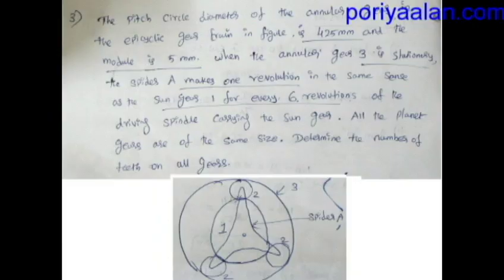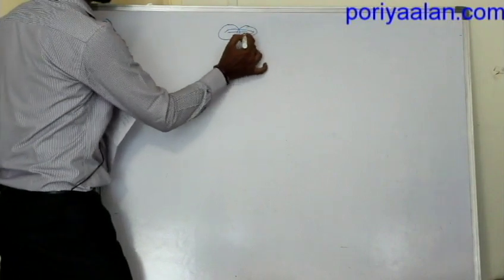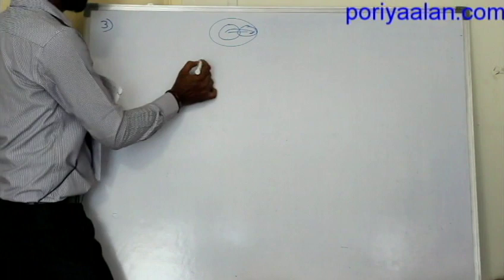Third sum: the pitch circle diameter of the annular gear in the epicyclic gear train in the figure is 425 mm and the module is 5 mm. When the annular gear 3 is stationary, the spider A makes one revolution in the same sense as the sun gear 1 for every six revolutions of the driving spindle carrying the sun gear. All the planet gears are of the same size. Determine the number of teeth on all gears.